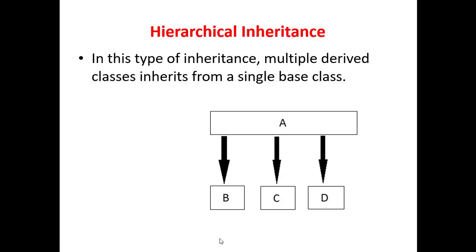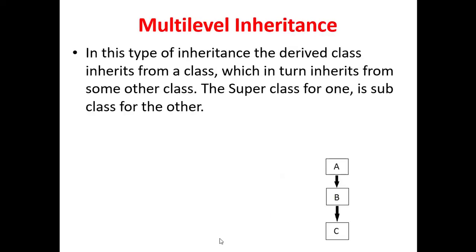The next type is multi-level inheritance. In multi-level inheritance, one class is derived from another, and that class is derived from a third one. For example, class C is derived from class B, and class B is derived from class A. Whenever you have such levels of inheritance chained together, that is called multi-level inheritance.